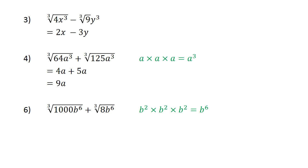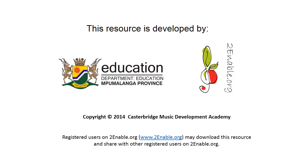The cube root of 1000b to the power of 6 plus the cube root of 8b to the power of 6 equals 10b to the power of 2 plus 2b to the power of 2. They are like terms, so this equals 12b to the power of 2.